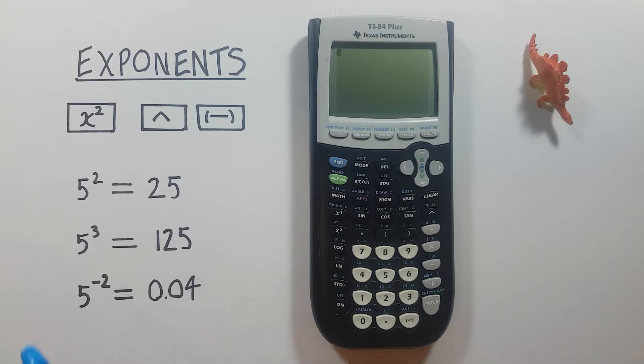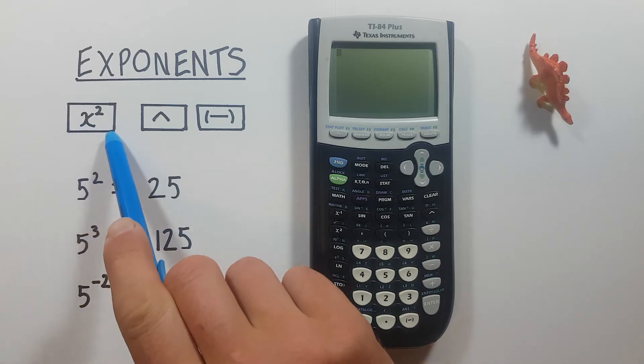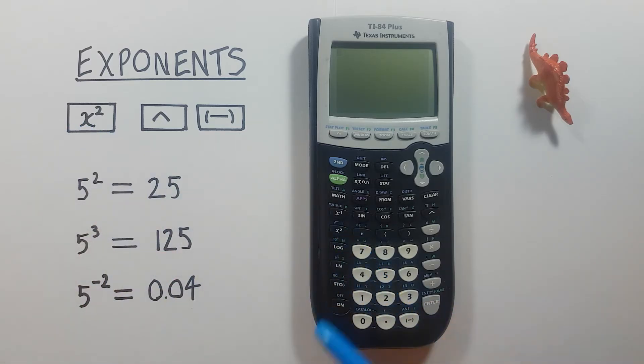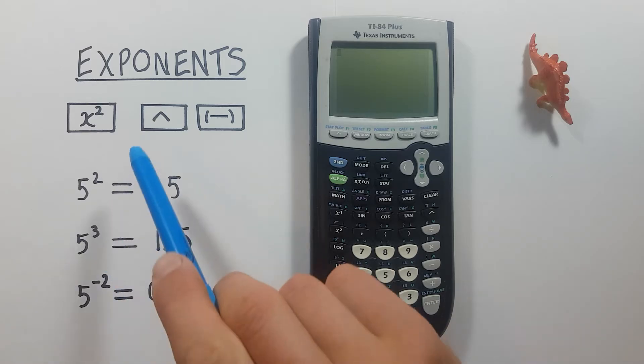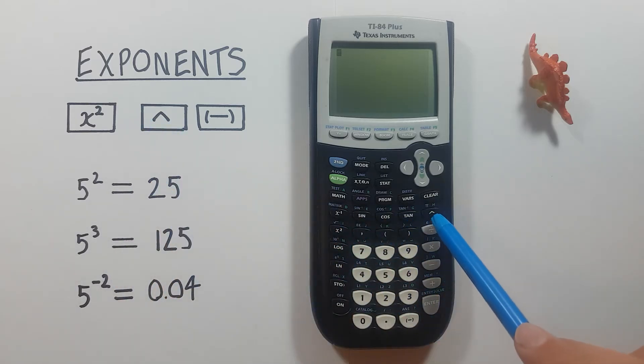To do that we'll be using the x squared key that looks like this located here, the up arrow or caret key that looks like this located here, and for negative exponents we'll use the negative key that looks like this located down here.